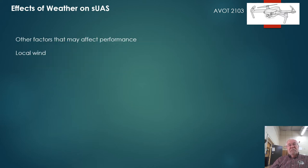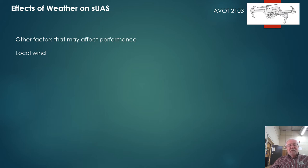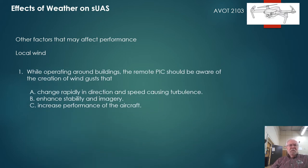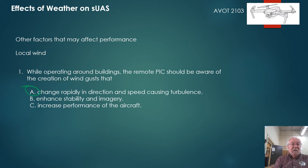Besides density altitude, there are other factors that may affect drone performance. Local winds are one: flying around tall buildings, the wind can swirl around and cause controllability errors and local turbulence. Mountains also create turbulence. Downtown Atlanta can be a difficult place to fly because of all the buildings and swirling wind. A related test question asks: while operating around buildings, what should a remote pilot be aware of? The answer is the creation of wind gusts that change rapidly in speed and may cause turbulence.